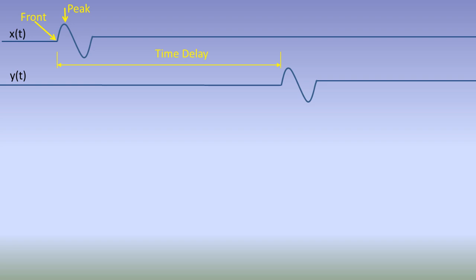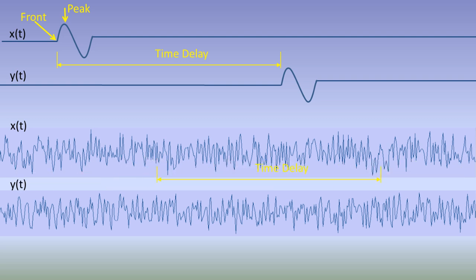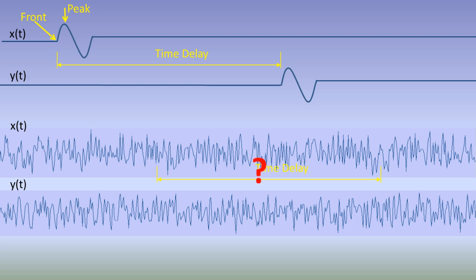What if the test pulses are buried in noise, or the test signals are continuous — like this, for instance? In which cases, it is difficult to find the reference points on the waveforms. Here we would like to introduce the cross-correlation method for time delay measurement.